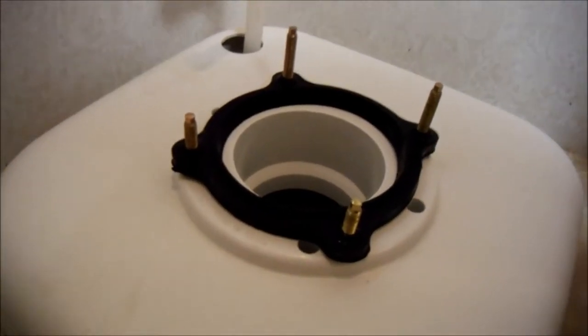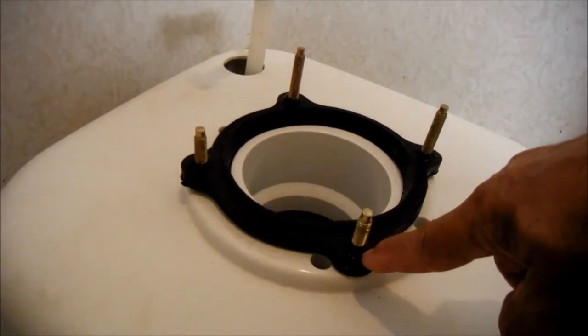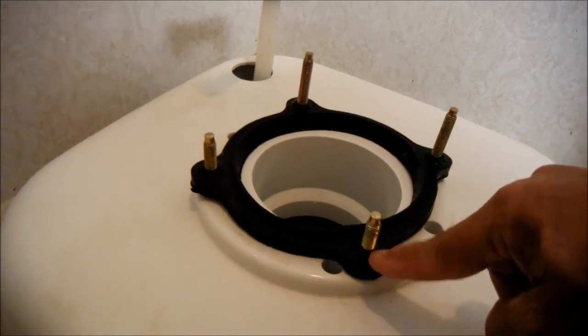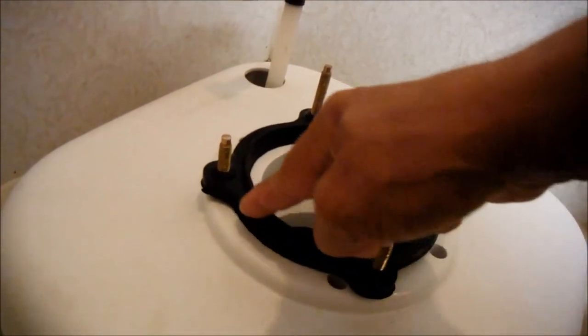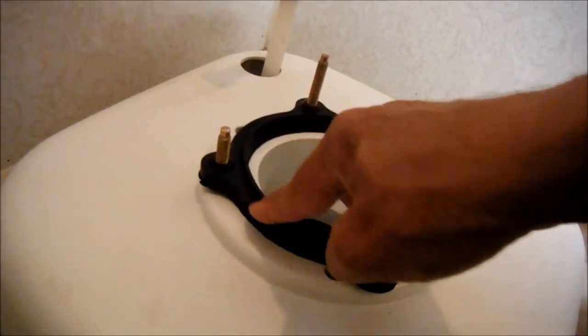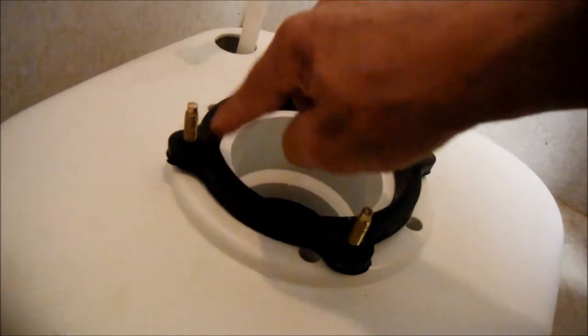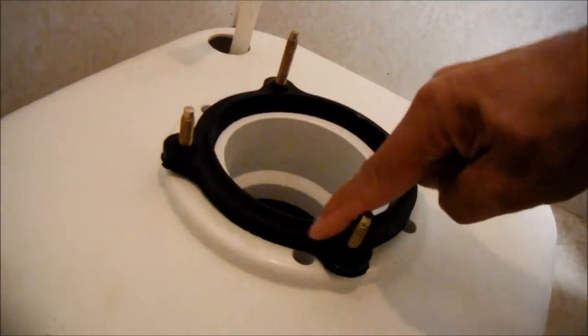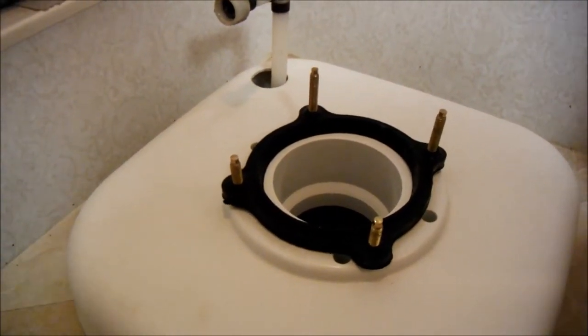The sealant gasket is on there. I had to take a pointed object and shove it through right here to make holes for the bolts to come out of. It does say right here 'this side up' just to keep from putting it upside down. We did coat it all with dishwashing detergent as the instructions said, I guess to make sure that everything slides into place the way it's supposed to. Now we're going to go get the toilet and set it on there and see how that fits.